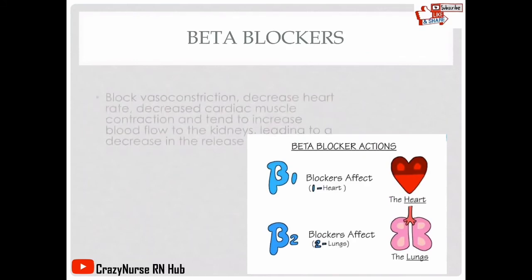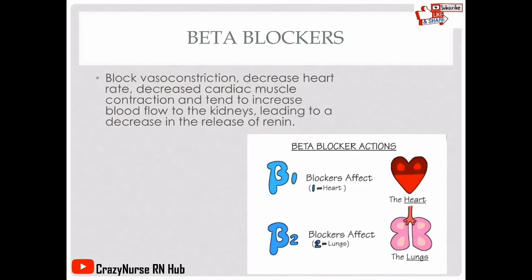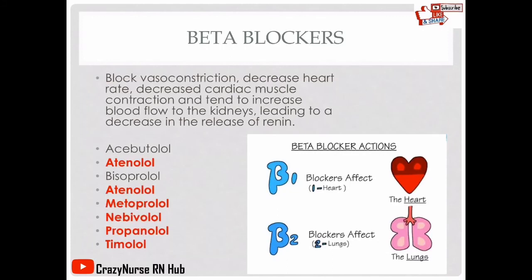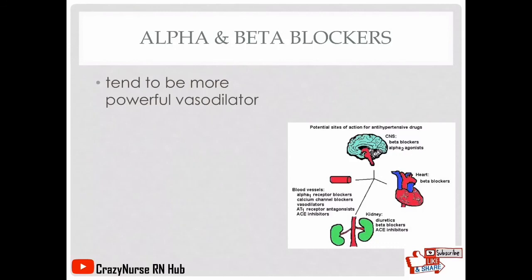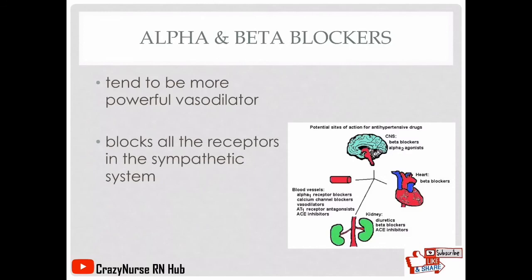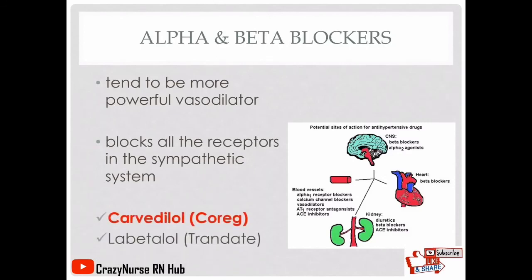Beta blockers block vasoconstriction, decrease heart rate and cardiac muscle contraction, and tend to increase blood flow to the kidneys, leading to a decrease in the release of renin. Examples include atenolol, metoprolol, nebivolol, propranolol, and timolol — easy to identify by their '-lol' ending. Alpha and beta blockers tend to be more powerful vasodilators as they block all receptors in the sympathetic system. Examples are carvedilol (Coreg) and labetalol (Trandate).